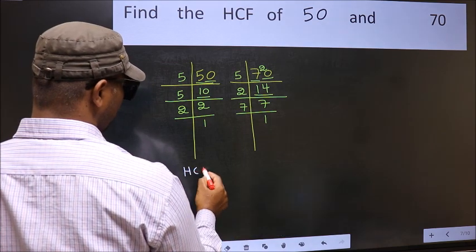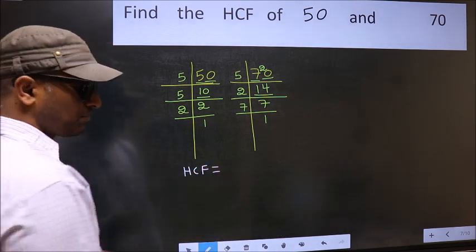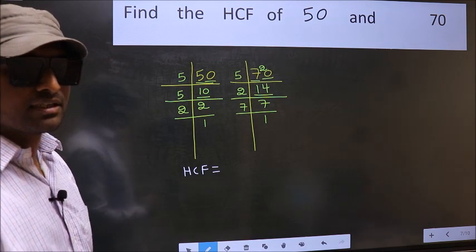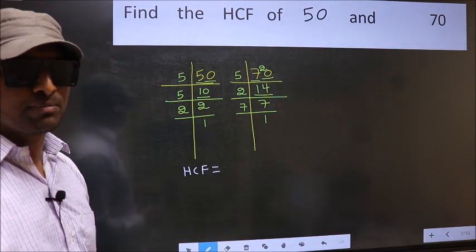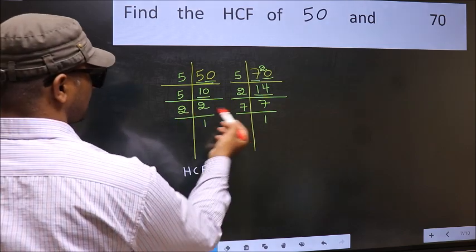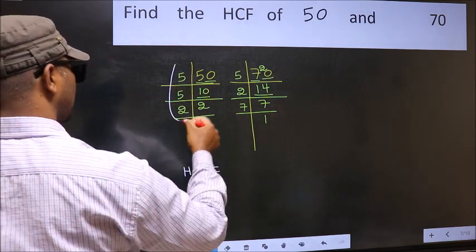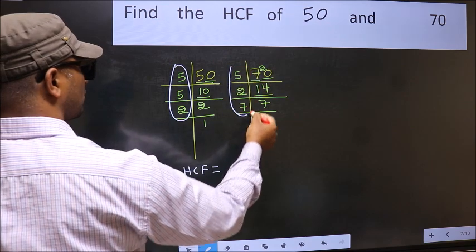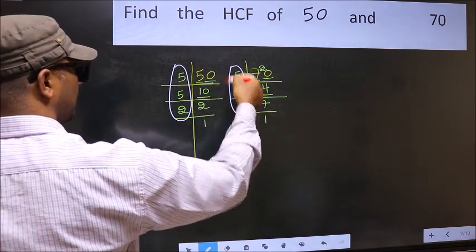Therefore, our HCF is the product of the numbers which should be present in these two places. That is here and also here. Here and here.